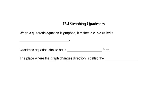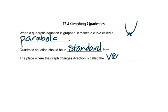When a quadratic equation is graphed, it makes a curve called a parabola. It's like a U-shaped curve. The quadratic equation should be in standard form, just like in the last two sections we've done. And this place where the graph changes direction is called the vertex.